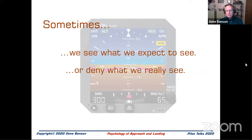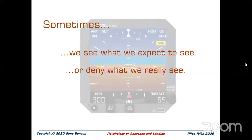Sometimes we see what we expect to see, or we deny what we really see — this is sometimes a difficult situation to overcome. The use of bugs set to predetermined speeds on an airspeed indicator can serve as reminders. Calculating the MSL altitude the airplane should be descending through when turning final can also be helpful. But the best practice is to be aware that our perceptions are sometimes not accurate and to take a second look at critical items, especially when we know we are under pressure.